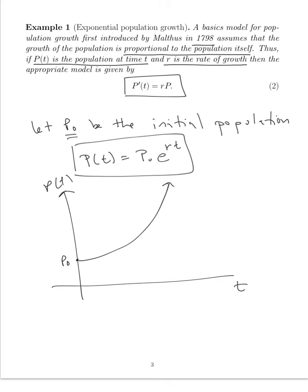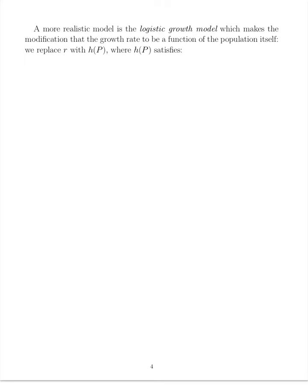It's not realistic because, in fact, we have limited resources. So a more realistic model would be the model for logistic growth, which really makes the modification that the growth rate now is a function of the population itself. So I'm going to replace R with H of P. So instead of having dP dt is equal to RP, I'm replacing this with dP dt is equal to some function of H of P times P.